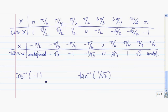Use these two tables to evaluate these two inverse functions — press pause while you work on it. The inverse cosine of negative 1 is pi, since the cosine of pi is negative 1. And the inverse tangent of 1 over root 3 is pi over 6, since the tangent of pi over 6 is 1 over root 3.